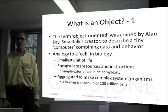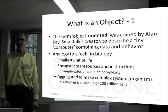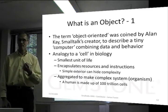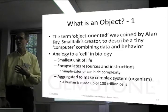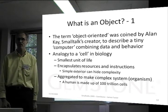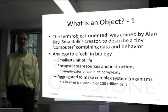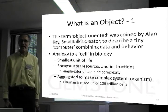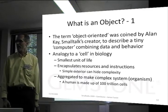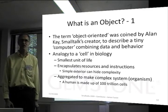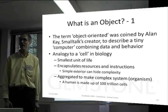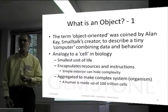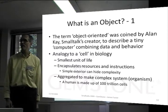Alan Kay coined the term object-oriented. Alan Kay was the creator of Smalltalk. He was describing a tiny computer combining data and behavior. Rather than just a data structure or a struct in C or some of these other languages, the analogy is to a cell in biology. The smallest unit of life encapsulates resources and instructions in a cell, and aggregating them, you can make a very complex system. The human body is made up of a hundred trillion cells — a very complex organism made up of very small, tiny parts that are encapsulated to hide the complexity. This is the vision for objects in Smalltalk.